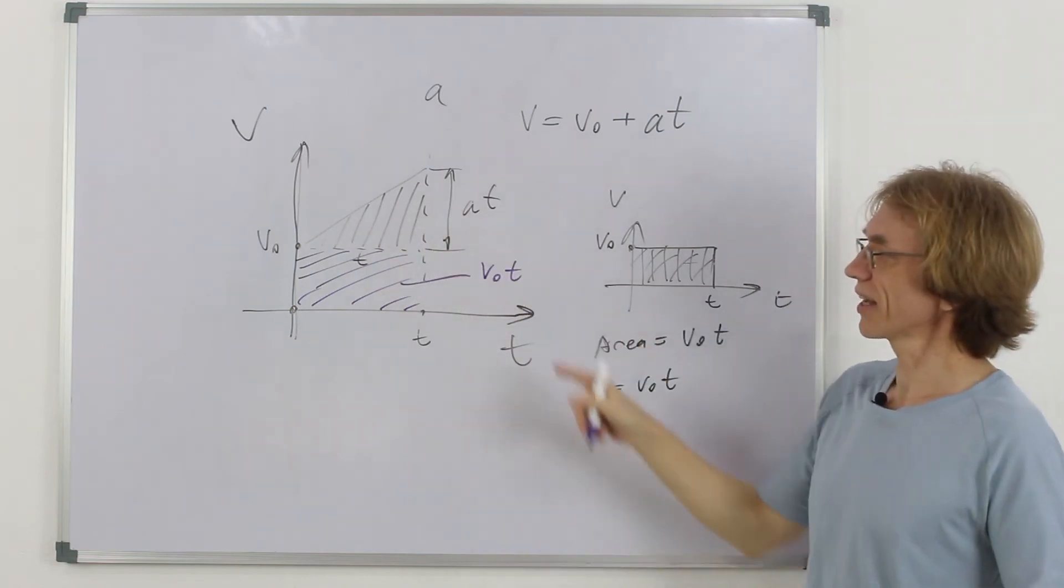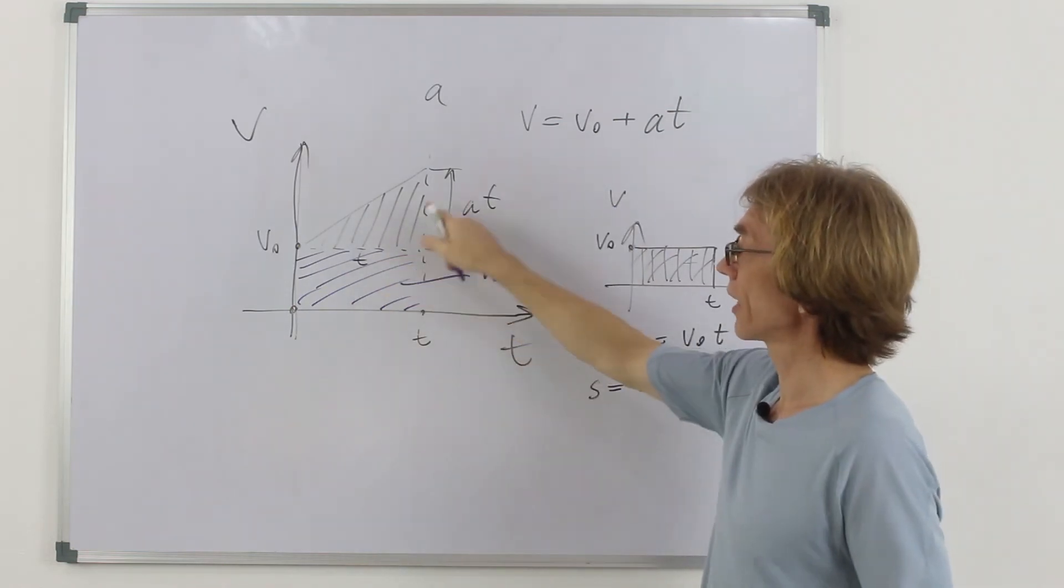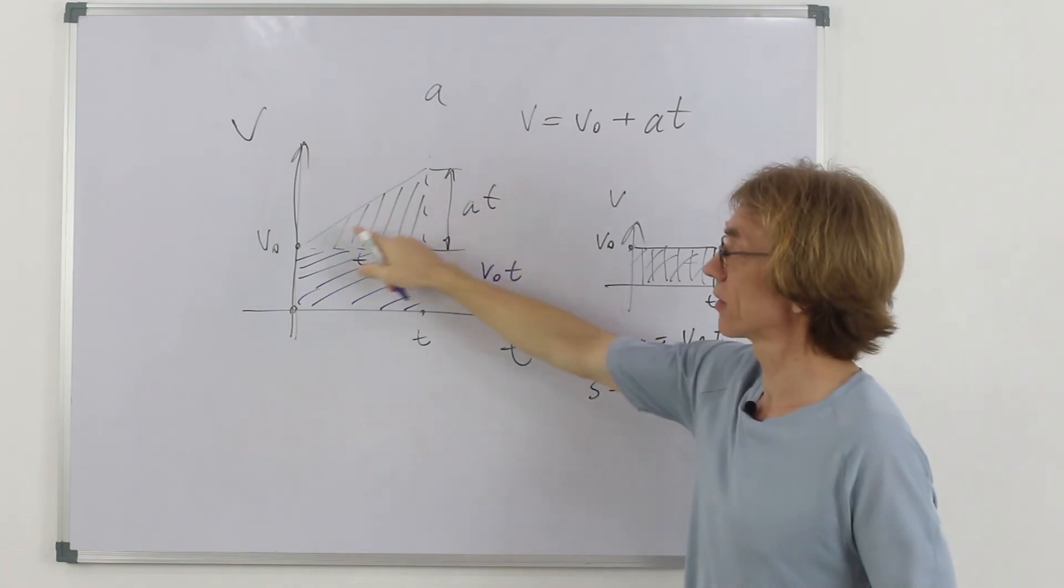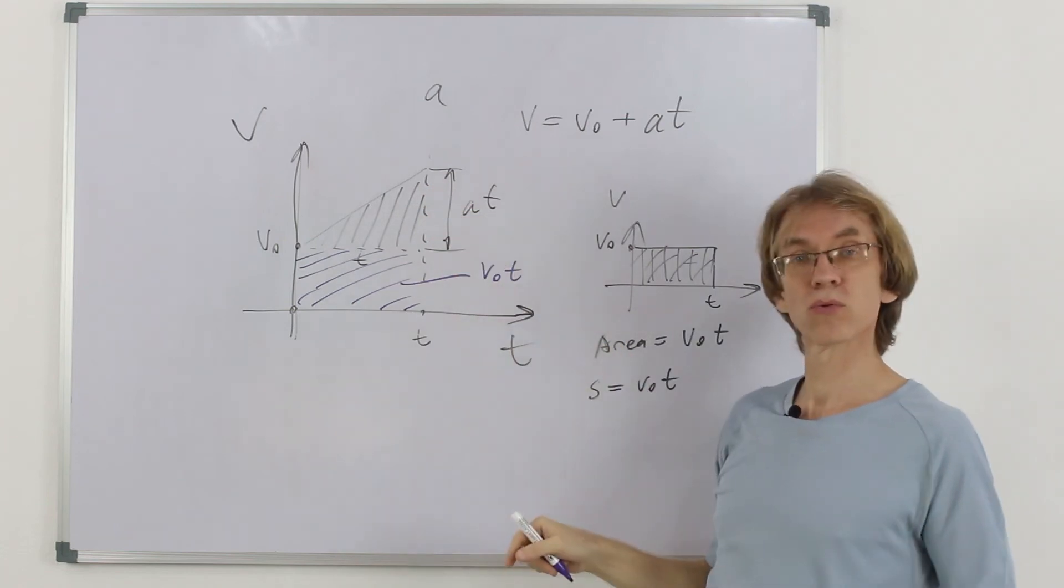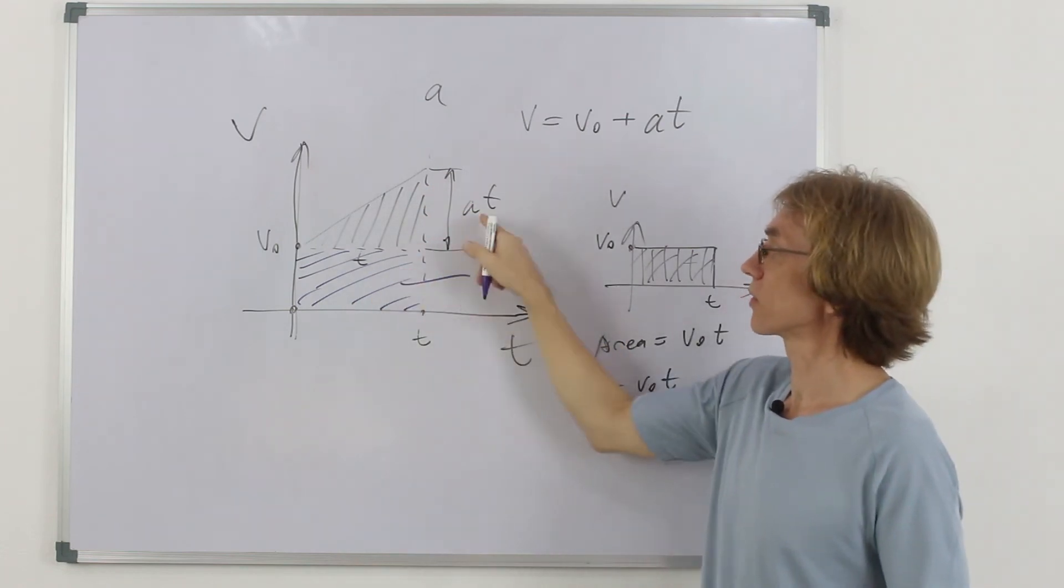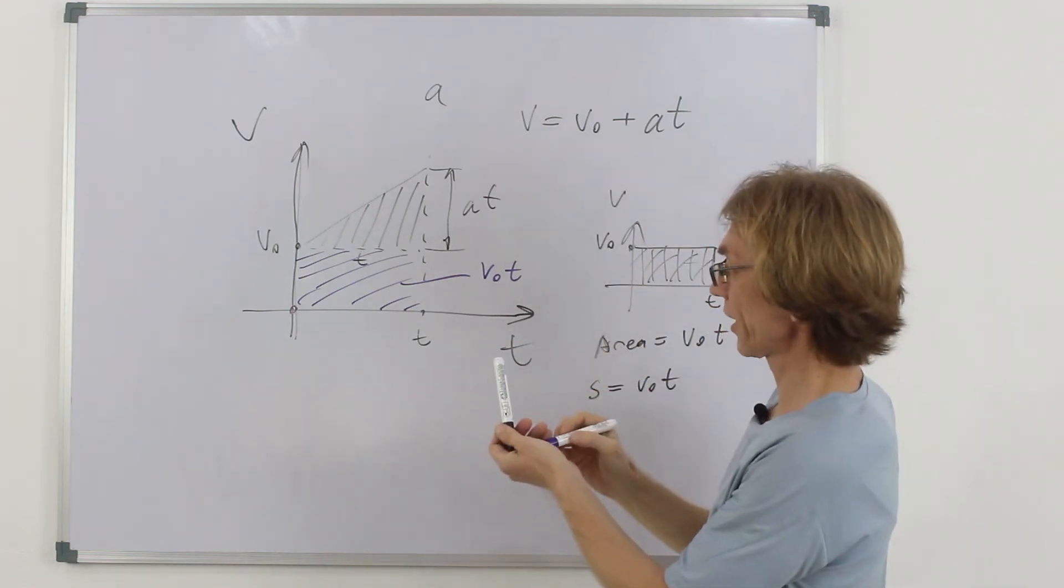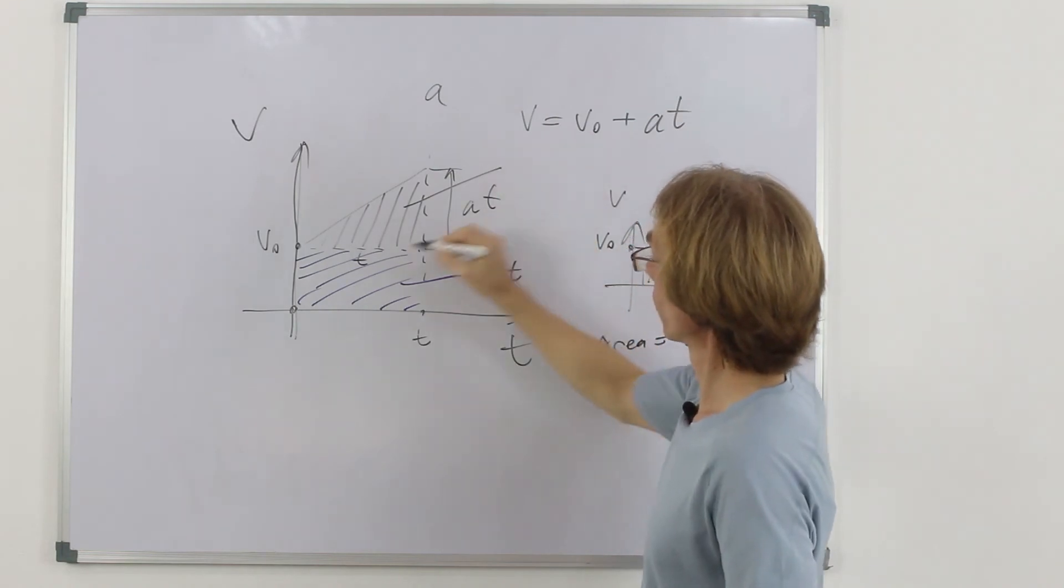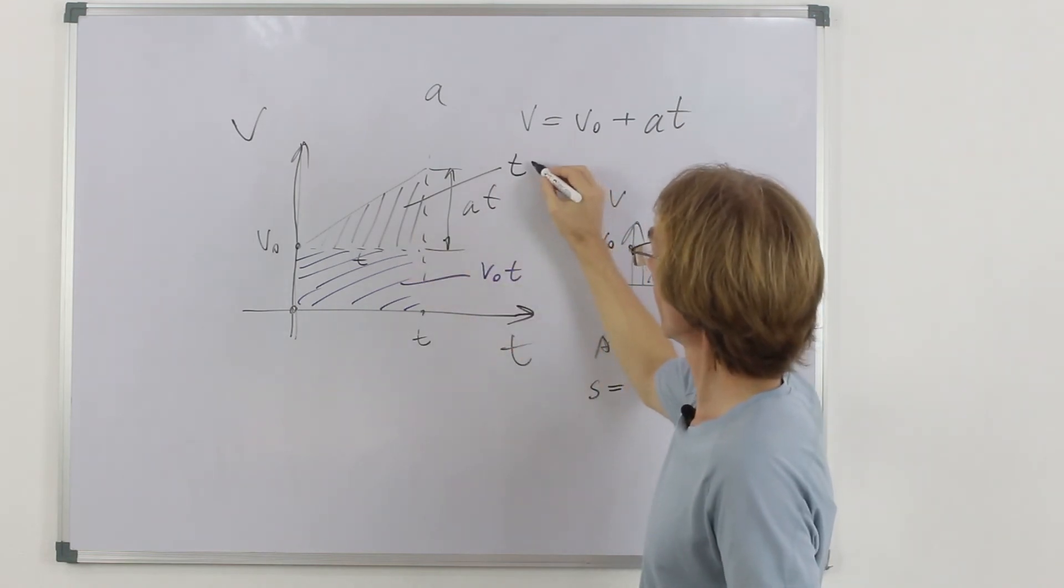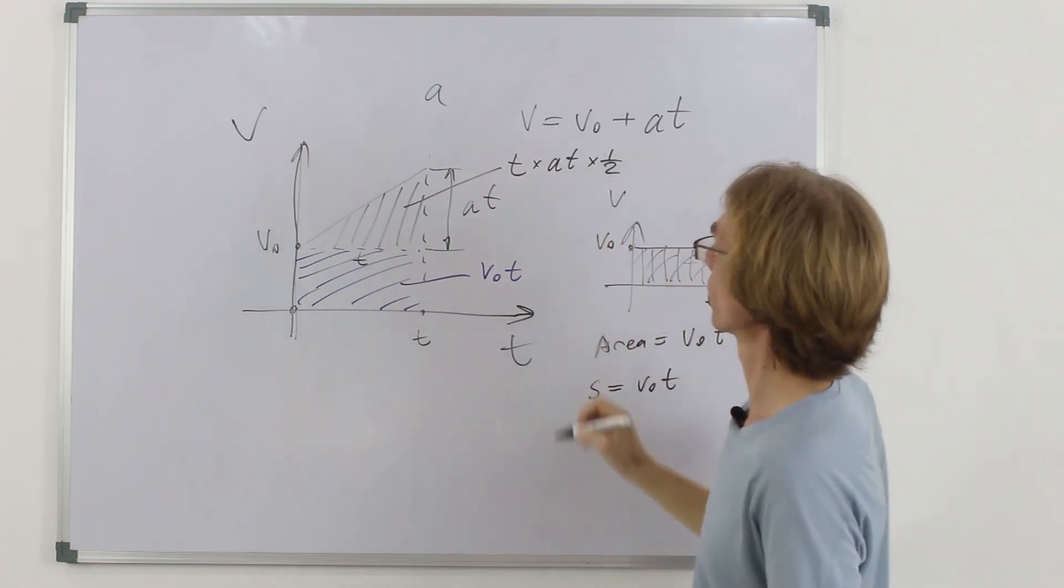And what is the area here? It is triangle. One side by the other side. And it's triangle and it's right angle one. There is a very simple rule for these ones. One side by the other side divided by 2. So, the area here would be one side is t, another side at and then divided by 2.